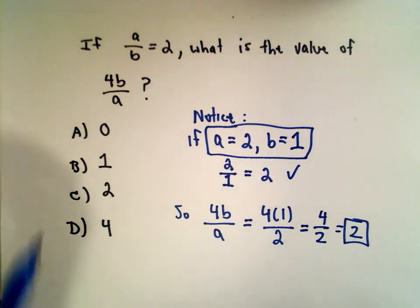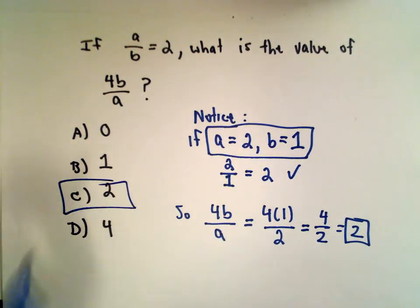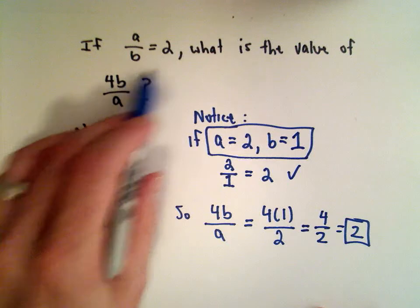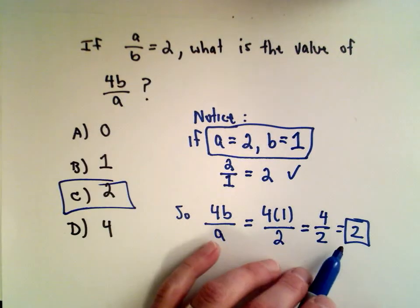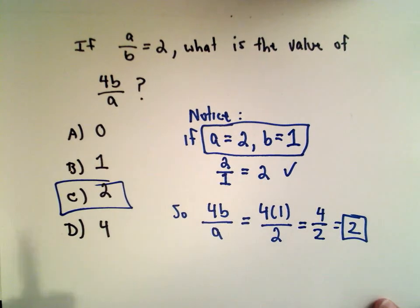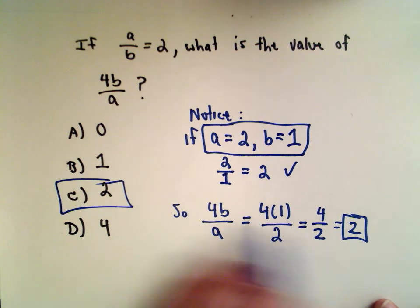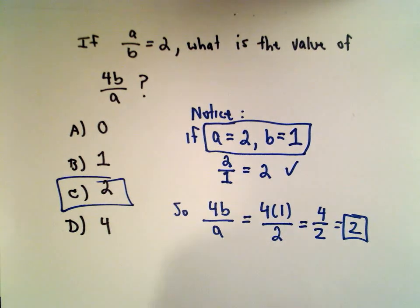So again, super quick, nothing tricky in that one. You could certainly do some algebraic manipulation to come up with this solution, but to me, that would be overkill. It would be so much faster just to pick some values that work, and you've done this in probably less than 10 seconds, and you're off to the next one.